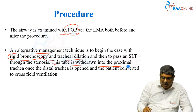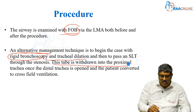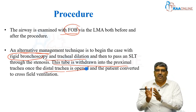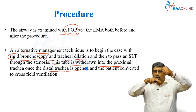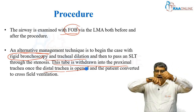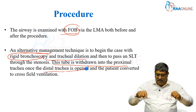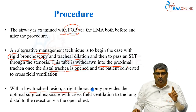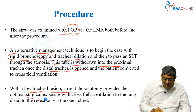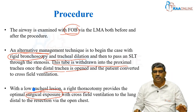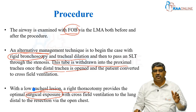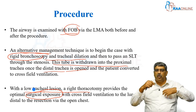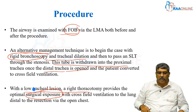The tube is withdrawn into the proximal trachea once the distal trachea is open and the patient is converted to cross-field ventilation. You pull the tube up, open up the trachea, and do cross-field ventilation. With a low tracheal lesion, a right thoracotomy provides optimal surgical exposure with cross-field ventilation to the lung distal to the resection via the open chest. When the lesion is low in the trachea, you cannot go through a cervical approach and you proceed with a right thoracotomy.